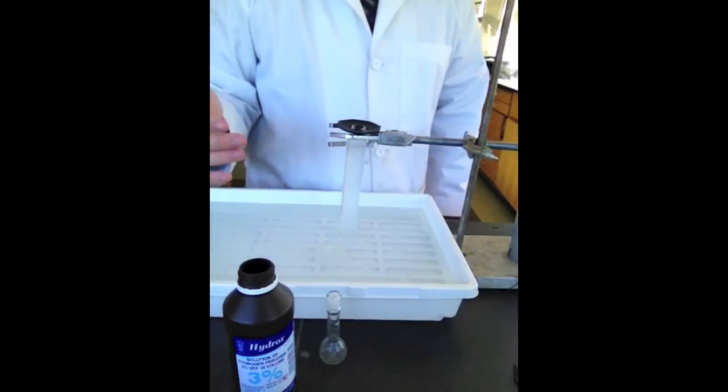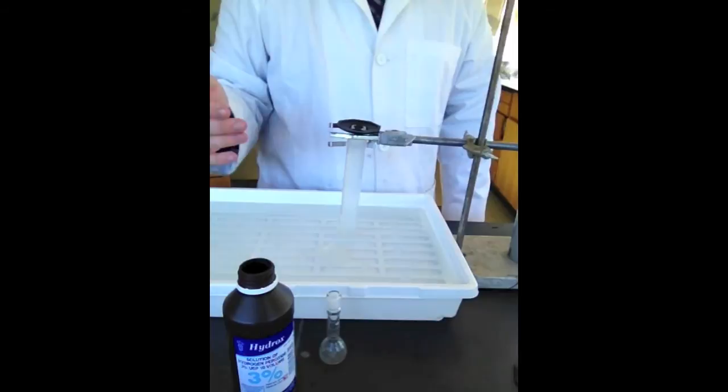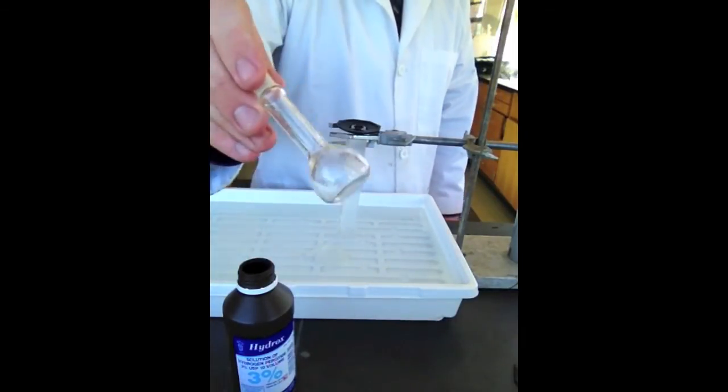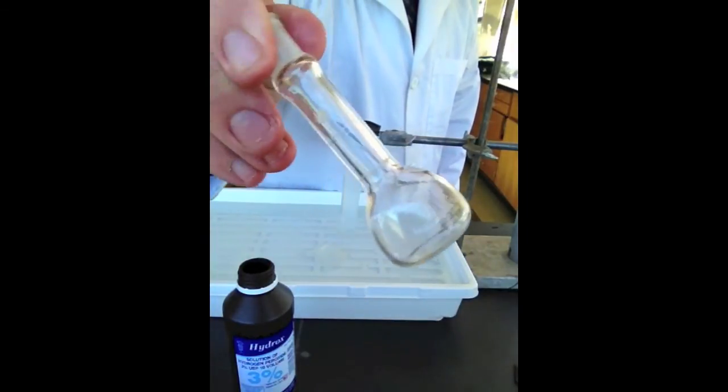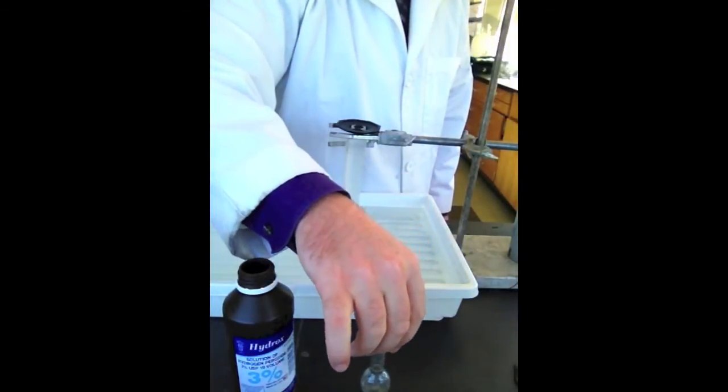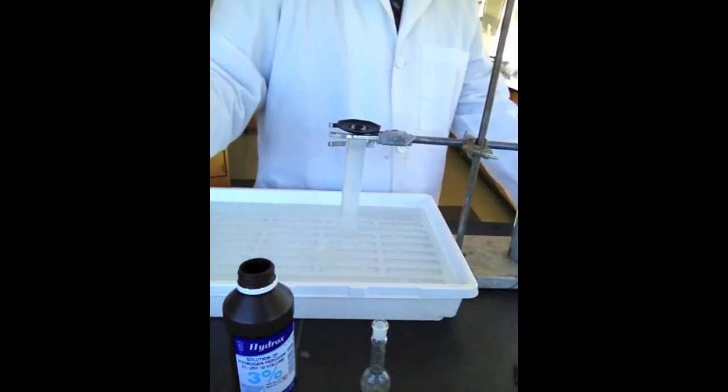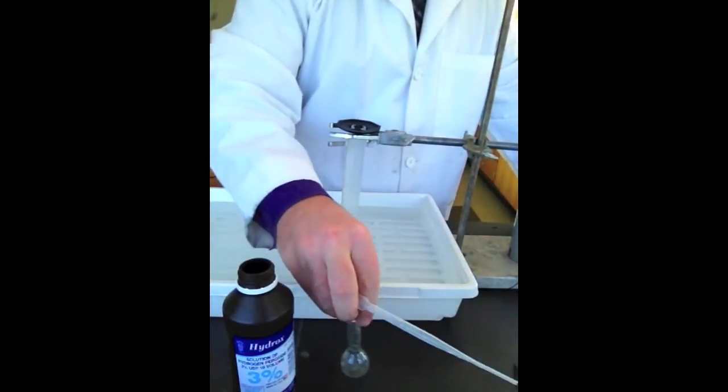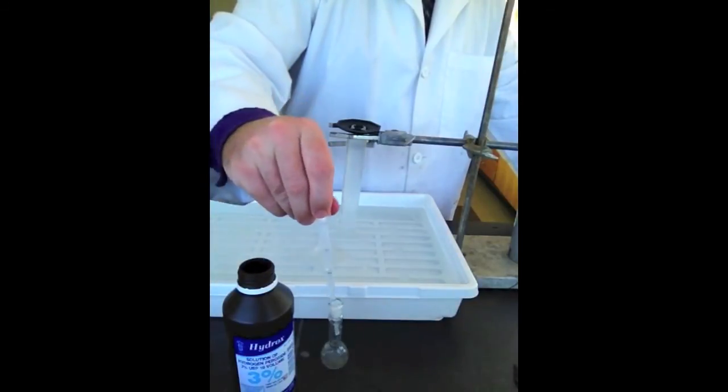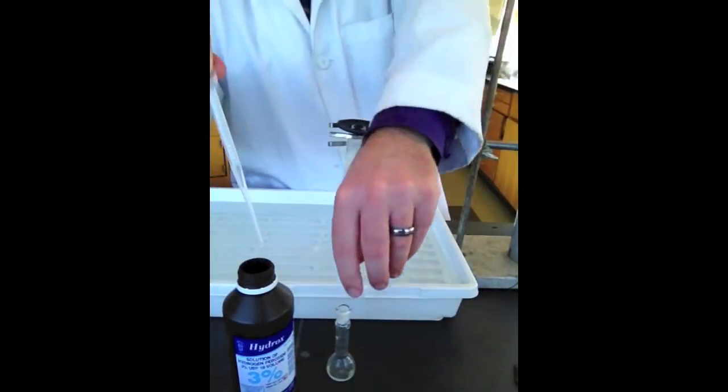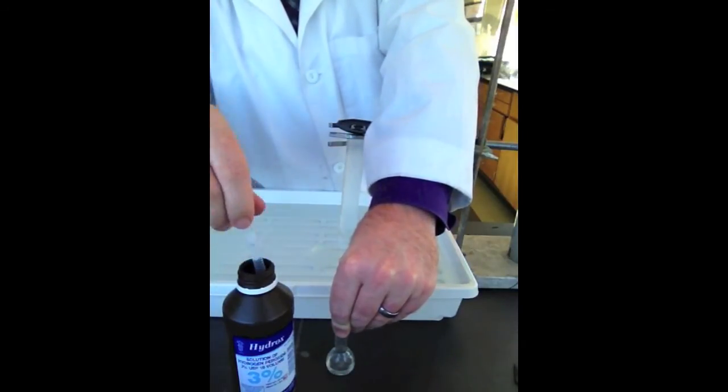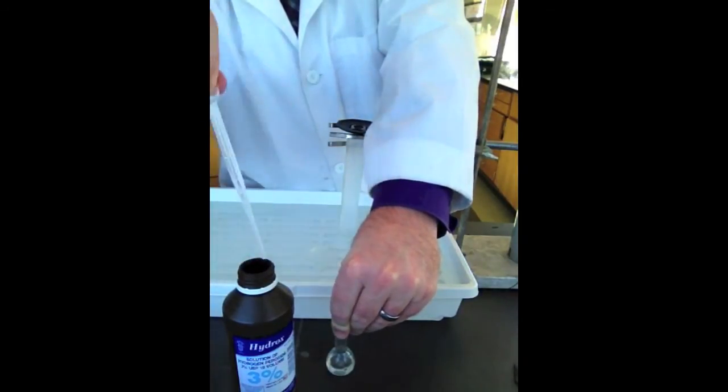All right, your lab manual says to get a 10 milliliter graduated cylinder. But instead of that, I have a 10 milliliter volumetric flask here. You can see it says 10 ml on there. And you can also see there's a white line on the neck of the cylinder. If you bring your level of liquid up to that level, that means that it's exactly 10 milliliter. So, it's a little easier than the graduated cylinder. So, each group is going to get one of those. So, we're just going to fill up one of those to that line. And that's going to give us our designated amount of hydrogen peroxide.